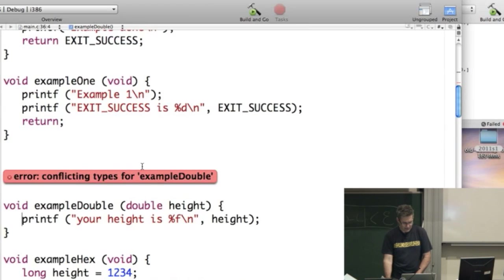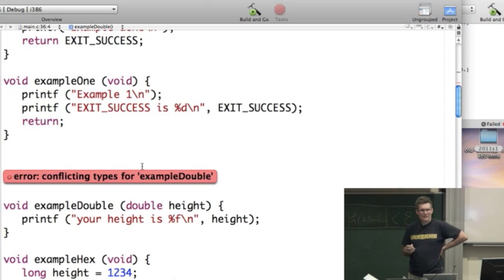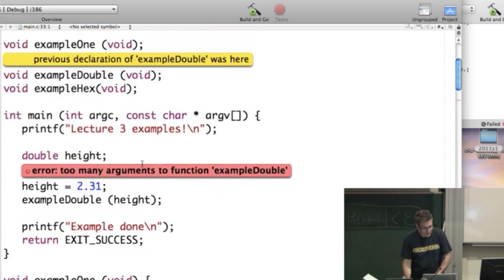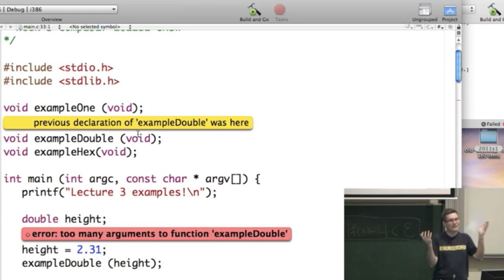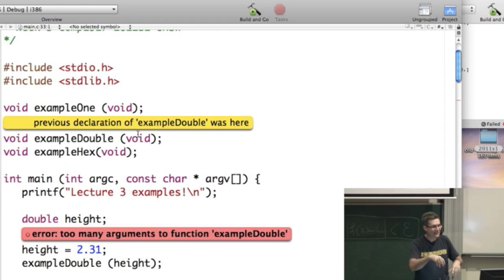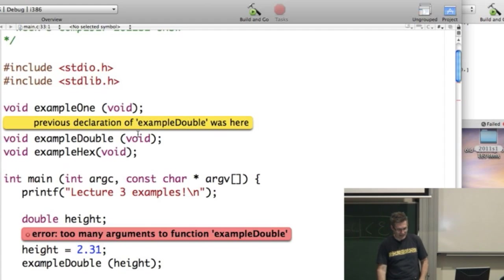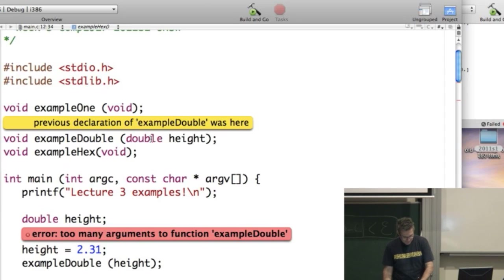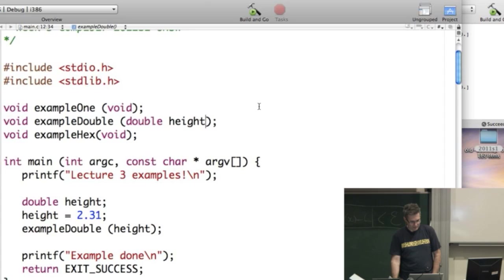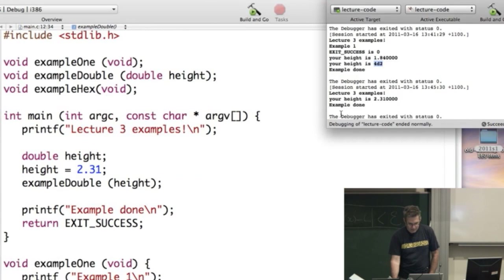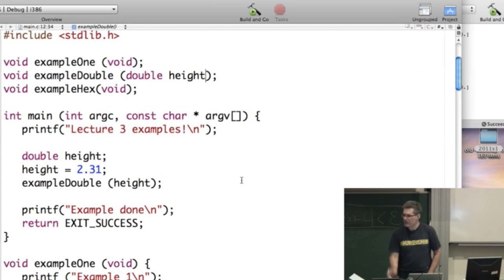Oh, no, it didn't. Conflicting types, for example, double. What does that mean? Conflicting types. You said something else at the top. I said something at the top. What did I say at the top? I declared it. I said, don't worry, compiler, relax. This function's going to have no inputs and no outputs. And then I'm calling it and giving it an input, and it's quite reasonably saying, that's not what you promised me up the top. So, let's just put in the actual parameter there. Okay, so did it work? Let's have a look. Your height is 2.31. So, it worked.